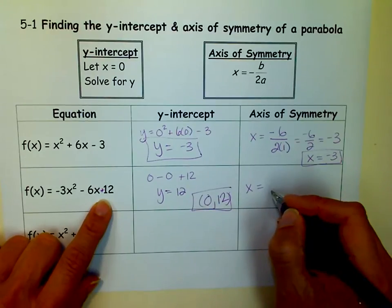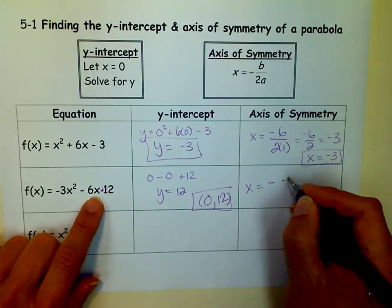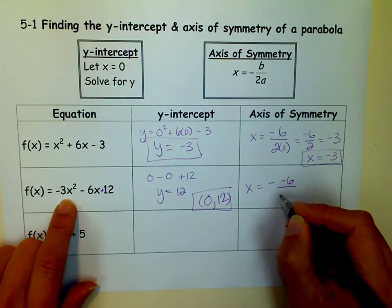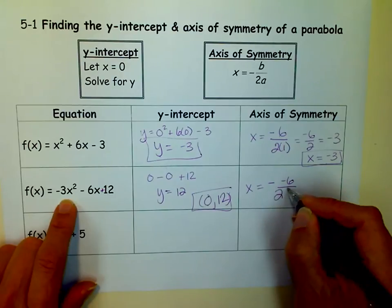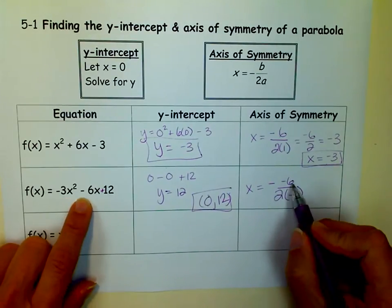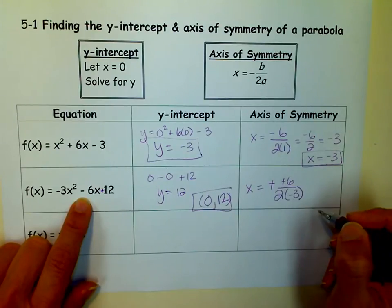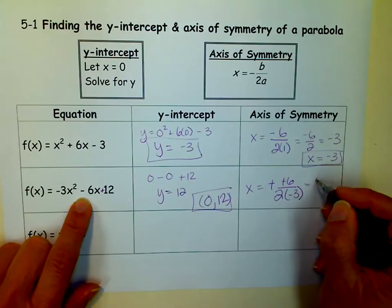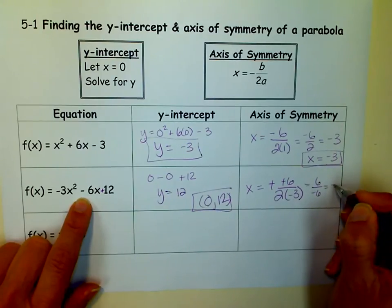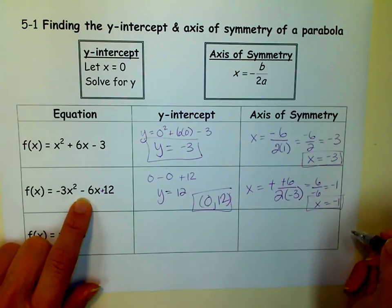So to find my axis of symmetry, I'm going to say x equals the opposite of b over 2a. So a was negative 3, and b was negative 6, so it's the opposite of that. So two negatives make a positive, and they're right next to each other. And so now I have 6 over negative 6, which equals negative 1. So my axis of symmetry is x equals negative 1.